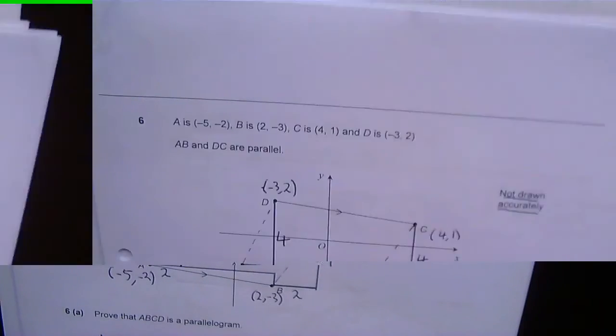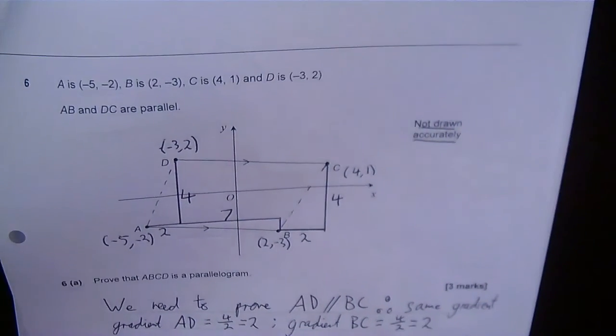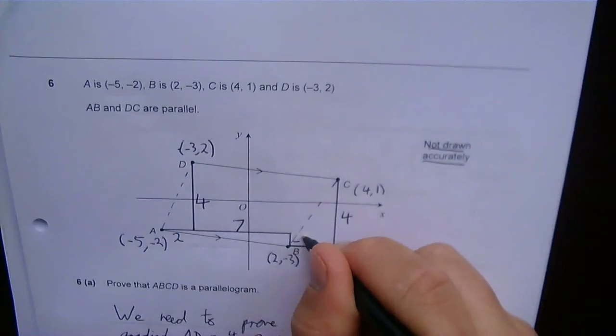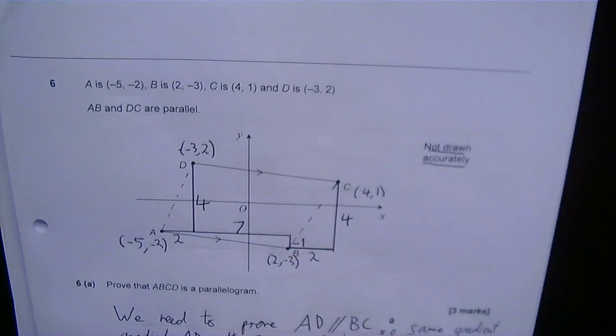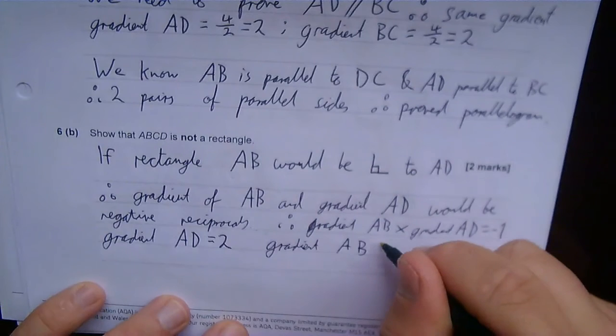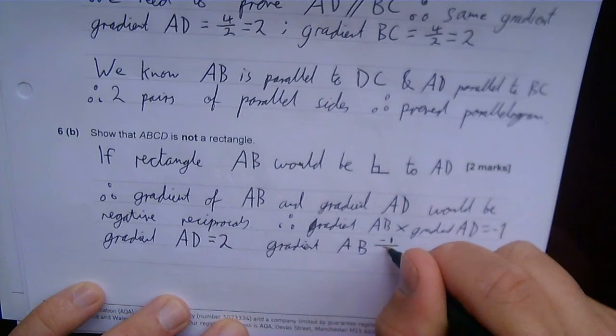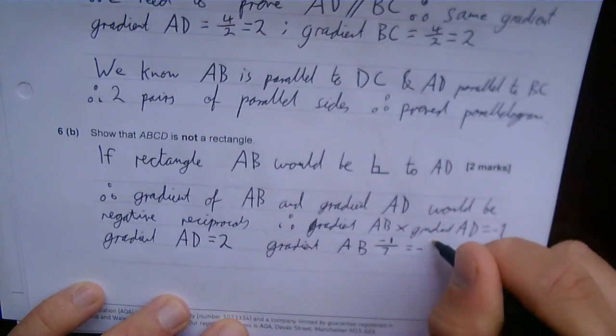So from -5 to 2, that is 7. And from -2 to -3, that's -1. So my gradient of AB is -1 divided by 7, which is -1/7.